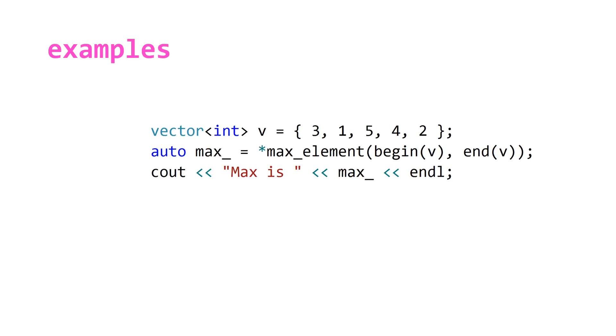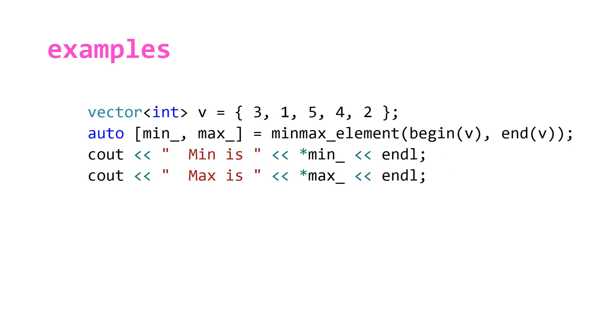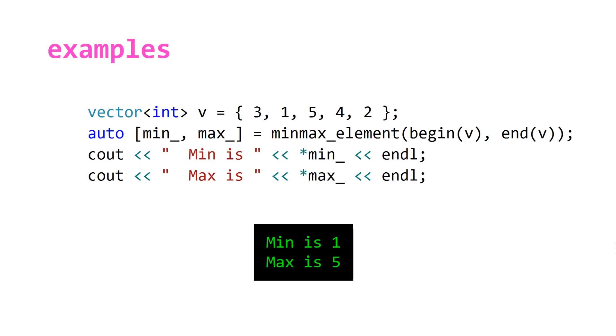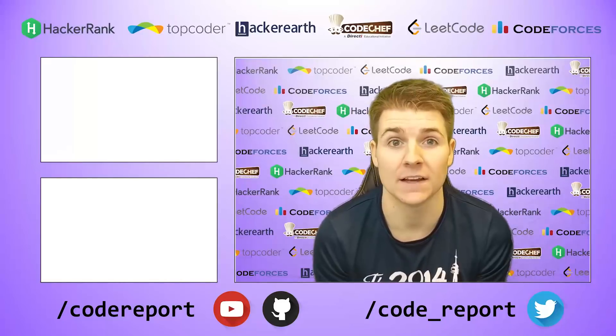For max_element it's the exact same thing except it's just going to return the maximum value which is 5. If we use minmax_element here and structured bindings as well, so this is C++17 code, we can get the following. Note that once again because we're using type inference here, the type inferred is going to be iterators meaning that we need to dereference at this point here.